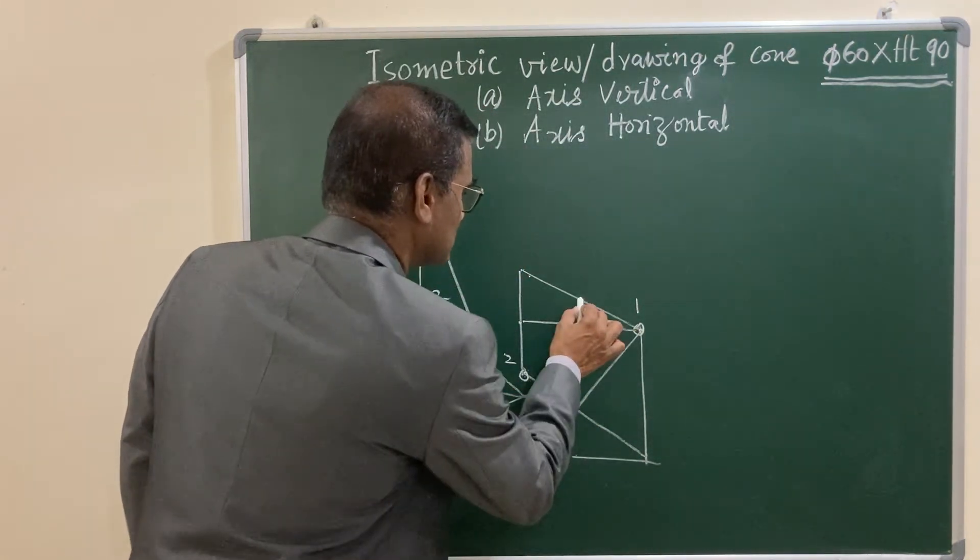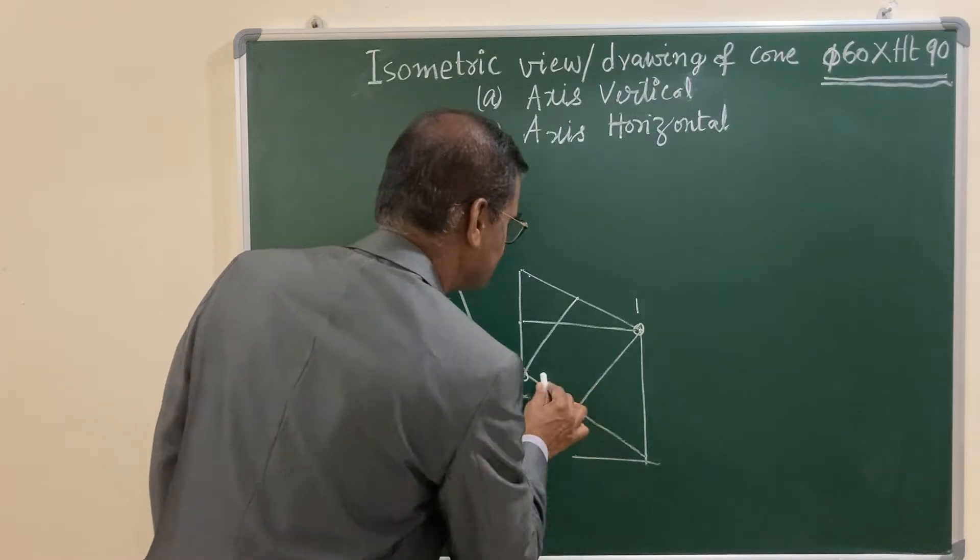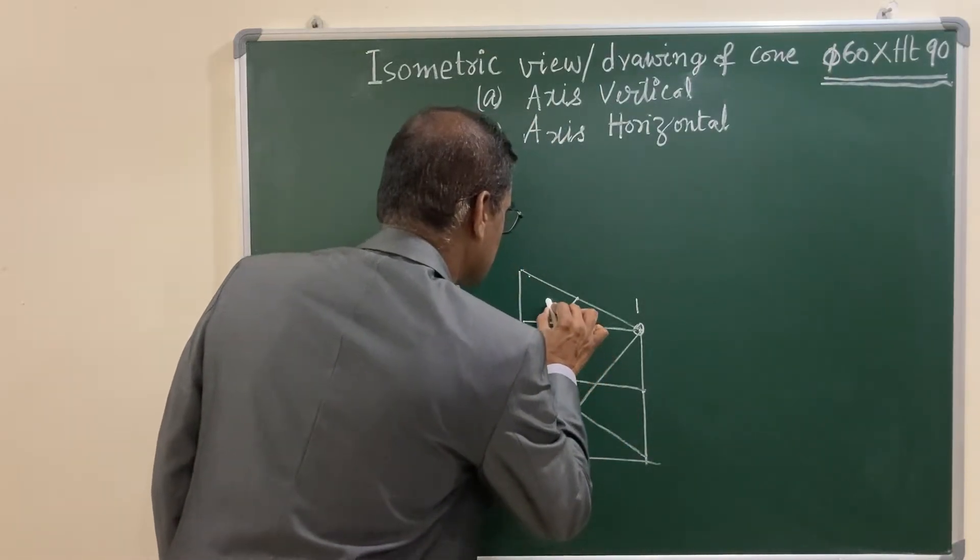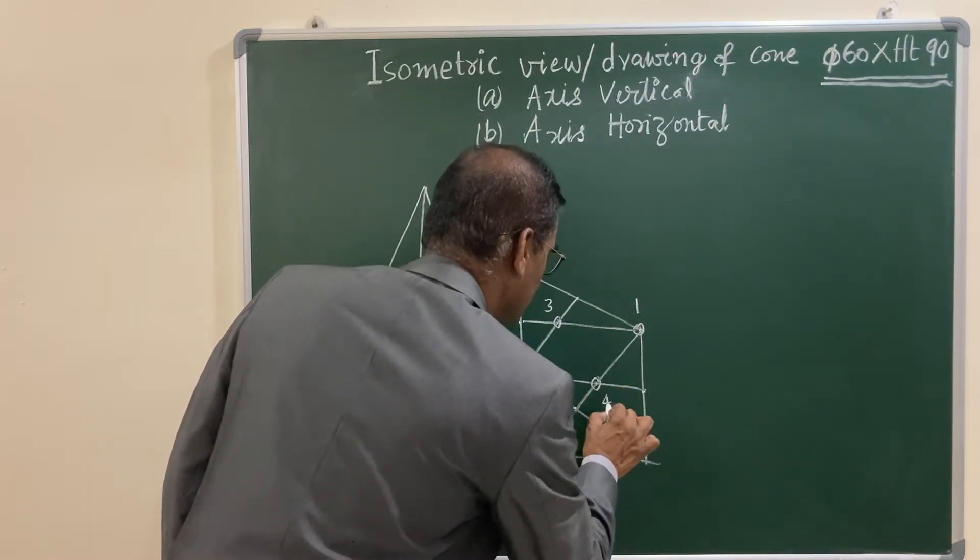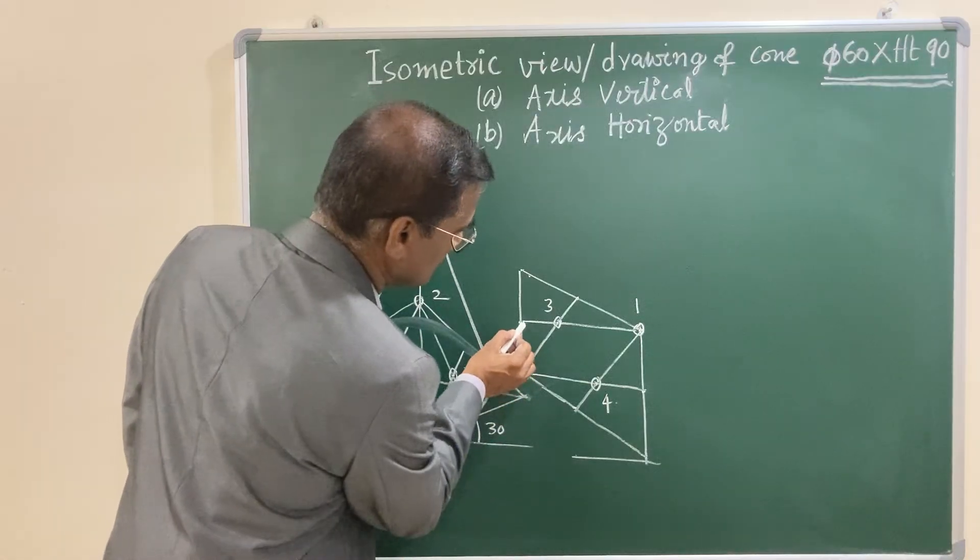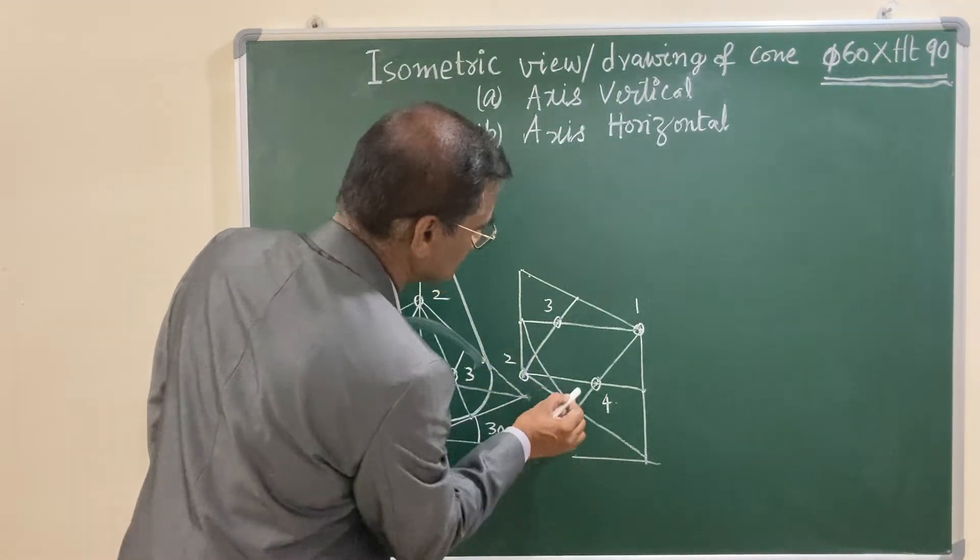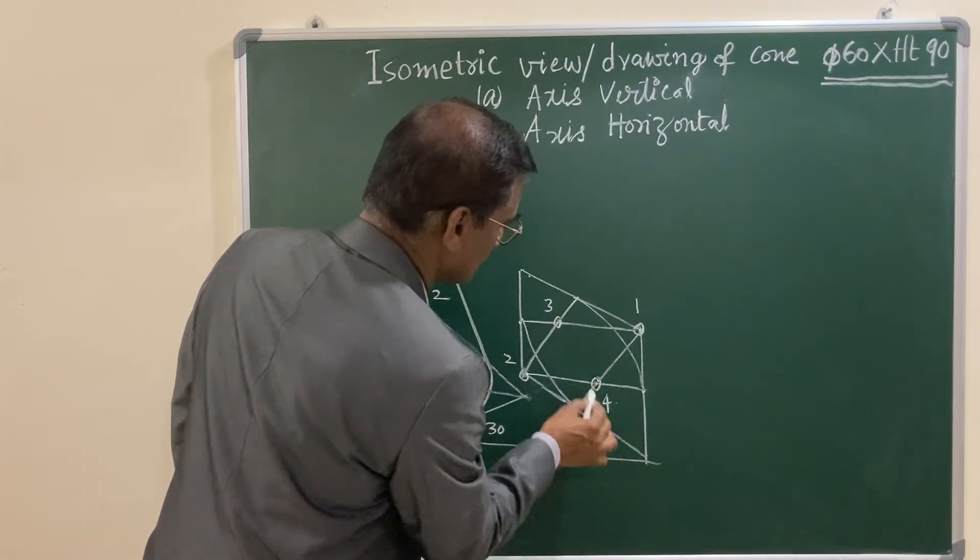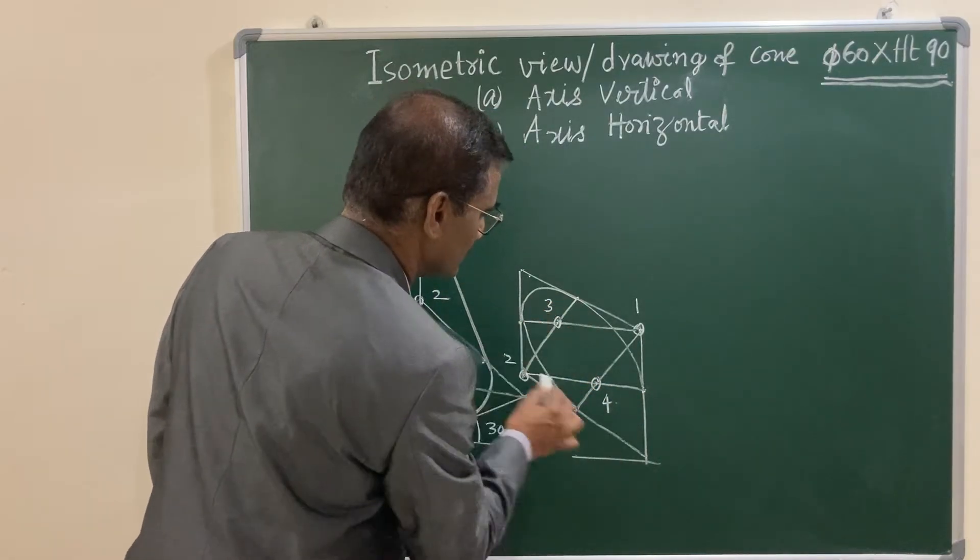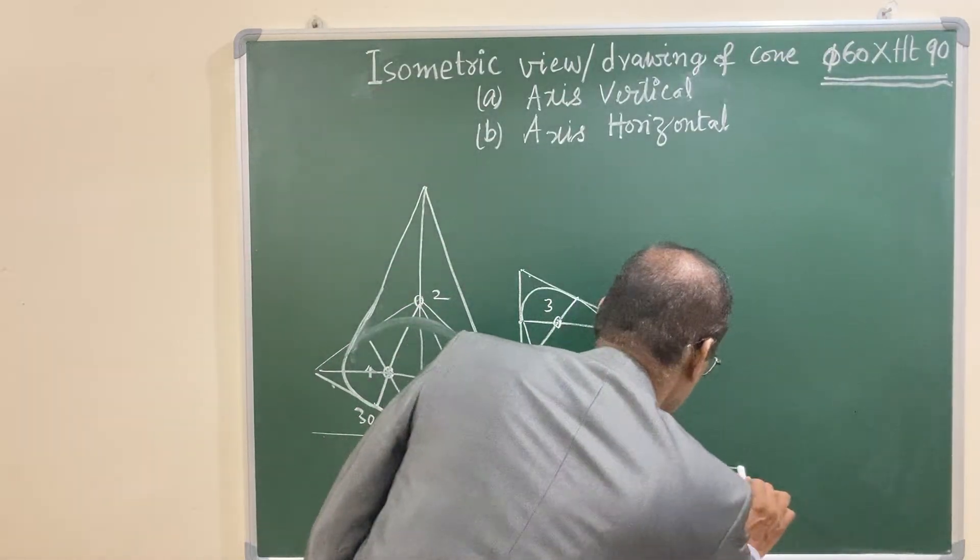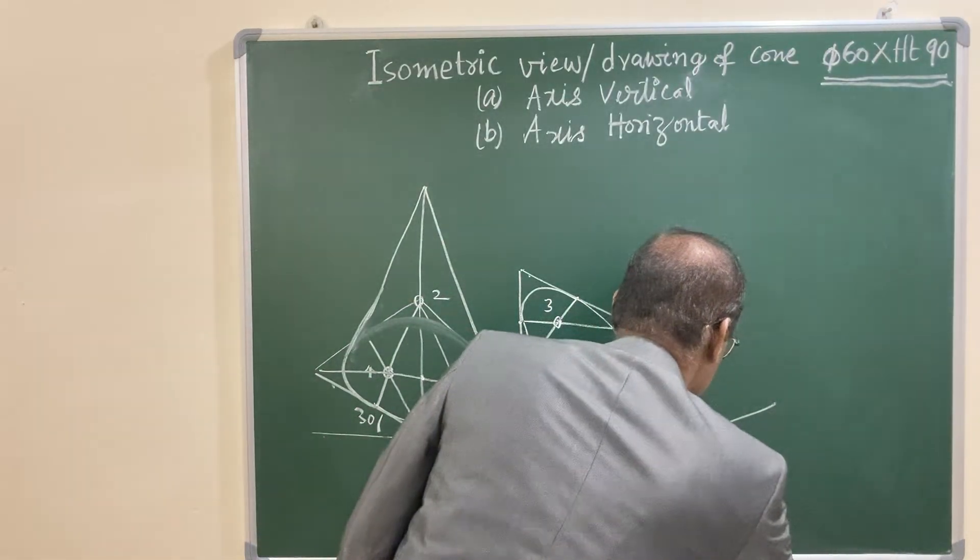Two with midpoints of opposite sides. You got the intersecting point, so this is three and this is four. Now, one as center, join these two points. Two as center, join these two points. Three as center, semicircular arc, and four as center.